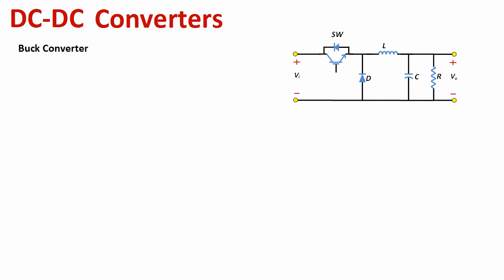Now we would like to know what happens at the load, which is composed of the R and C components. To simplify the analysis, we will replace the transistor switch with an ideal switch — in the real world there is a small R_on across the switch responsible for the voltage drop from collector to emitter, but we can use an ideal switch for now since we are developing the intuition. We will also remove the inductor and the diode to look at just the RC circuit.